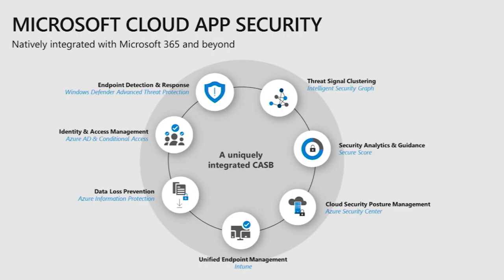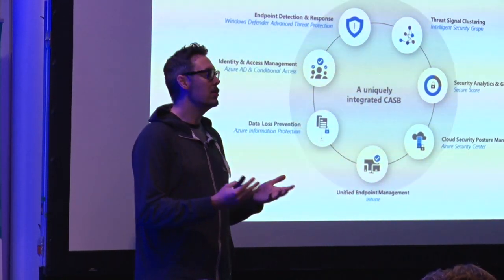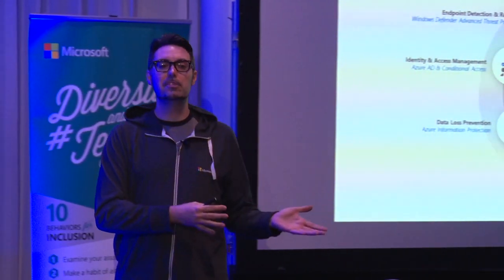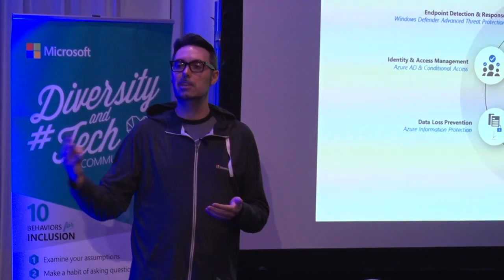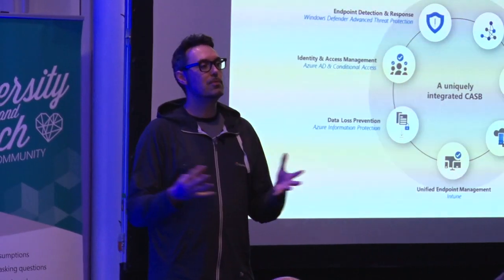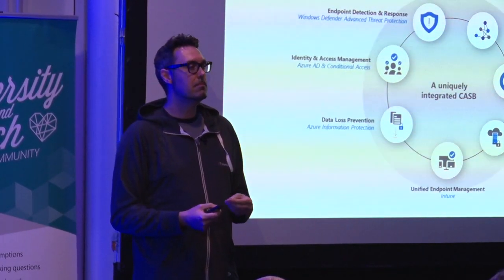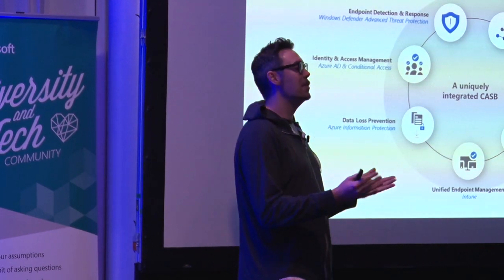What makes Cloud App Security unique in the CASB market is its integration with the full Microsoft security stack. Let's start with the Intelligent Security Graph — a collection of APIs at Microsoft that collect signals from billions of sources. We use authentication from Azure AD users, plus consumer services like Hotmail, Outlook.com, Xbox Live, and other services to provide information to all our customers about possible threats — compromised identities, compromised mailboxes, compromised IP addresses.